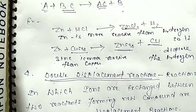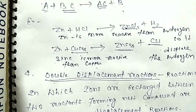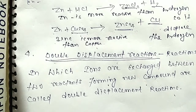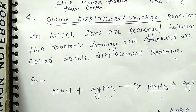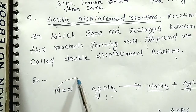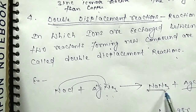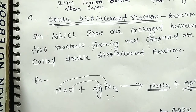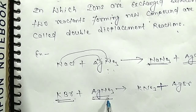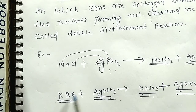Double displacement reaction: a reaction in which ions are exchanged between two reactants to form new compounds is called a double displacement reaction. For example, NaCl plus AgNO₃ gives NaNO₃ plus AgCl — Na combines with NO₃ and Cl combines with Ag. Similarly, KBr plus AgNO₃ gives KNO₃ plus AgBr. Two ions are exchanged, so it is a double displacement reaction.